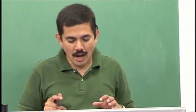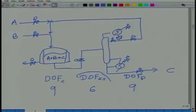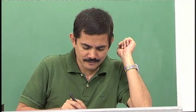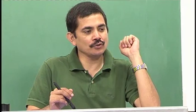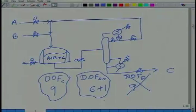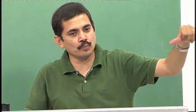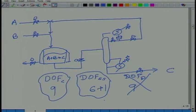For this course, since the process is already designed and we want to run it, our concern will be the steady state operating degrees of freedom and the control degrees of freedom — how many independent valves are there. We will not worry about design DOF, but the approach is general. Given the throughput, those are the set points we adjust. If throughput is not given, we can add plus 1.